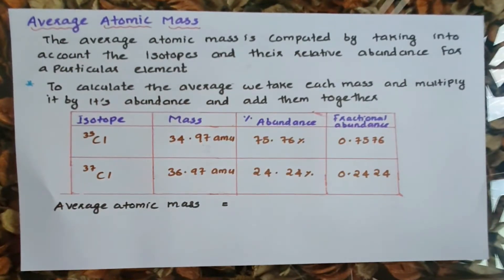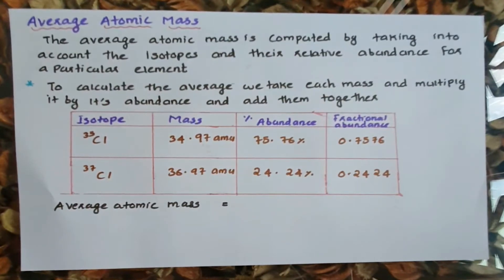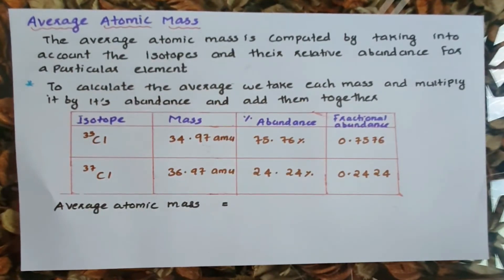These isotopes are not present in equal amounts in nature. Each isotope occurs in a different proportion in the atmosphere. To calculate the average atomic mass, we use the relative abundance — expressed as a percentage or fraction — of each isotope.